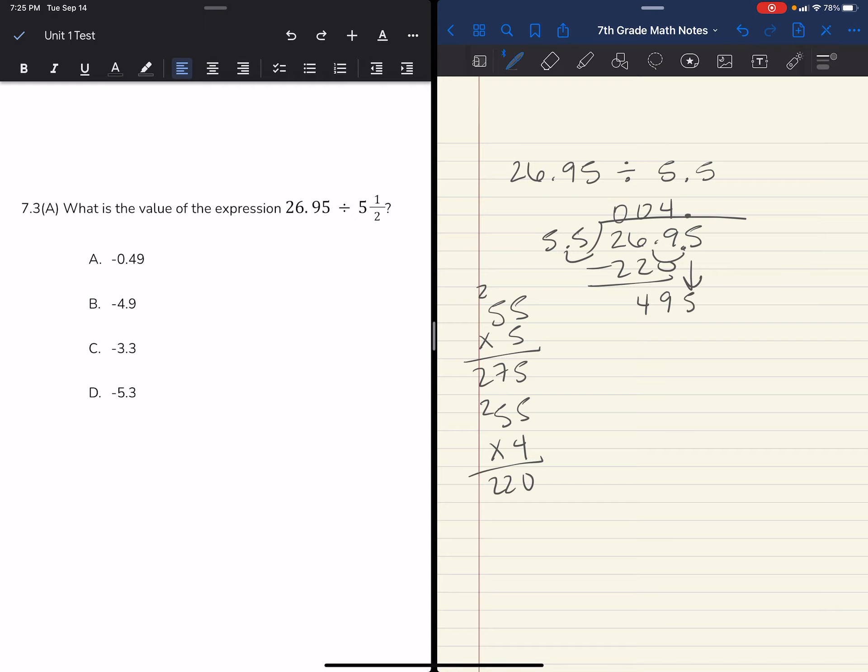Now I'm bringing down this last 5. 495. Well, looking at my answer choices, it's either 3 or 9. So I'm going to do 9. 5 times 9 is 45. 5 times 9 is 45, plus 4 is 49. Okay-o.